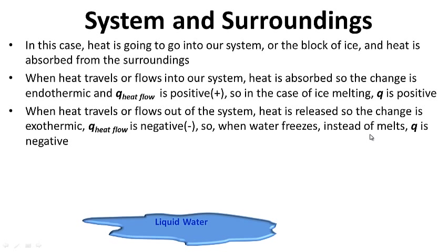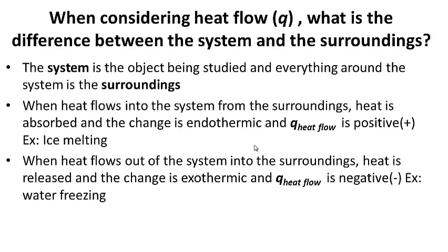When heat travels or flows out of the system, heat is released, so the change is exothermic, or negative. When water freezes instead of melts, Q is actually negative. For your notes, when considering heat flow Q, what is the difference between the system and the surroundings? Go ahead and pause this while you write.